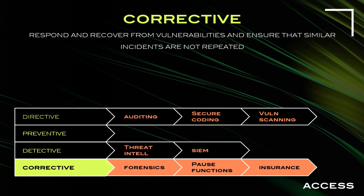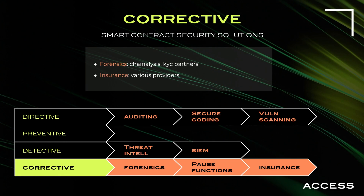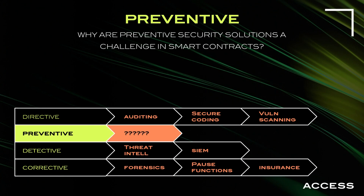For corrective controls and forensics, we have a partnership with Chainalysis. We're very focused on preventive — we try to stop incidents from ever happening — but when there are incidents we bring in the forensics experts to understand what happened. For insurance, there are various providers and different types, including decentralized insurance. Now, about this preventive area — the big hole — that's something we've been focused on too. It's the opportunity we saw: what can we do to help the industry have a platform that actually can prevent something in a decentralized environment without taking central control?